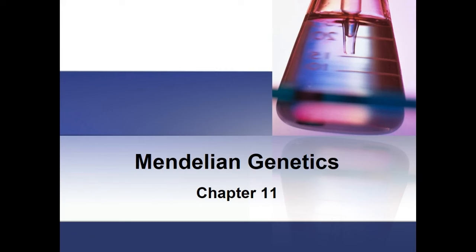If you're following along in your textbook, you'll notice that Mendelian genetics is actually the first section of Chapter 11, and meiosis is actually the fourth section. But I decided to move meiosis to the front because there's a natural progression in my mind between mitosis, which is where we ended in last semester's content, and meiosis, which is where we started in this year's content.